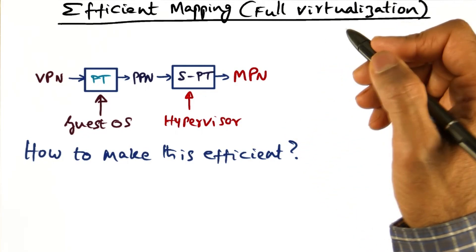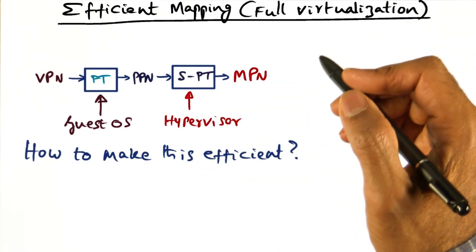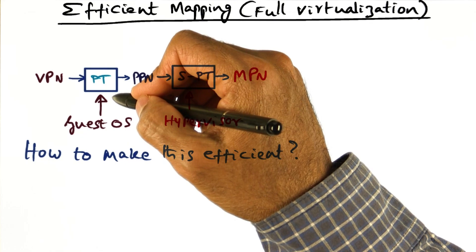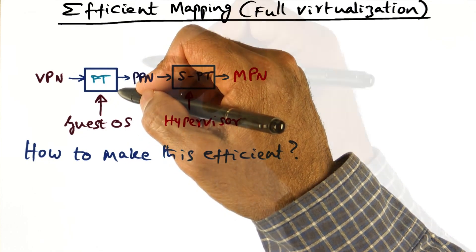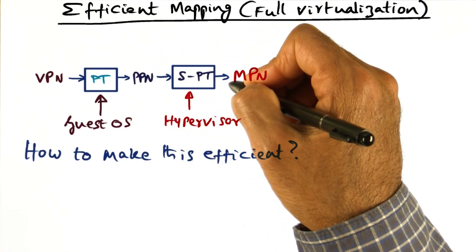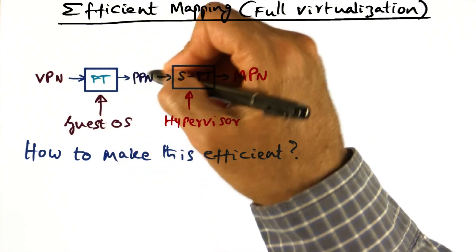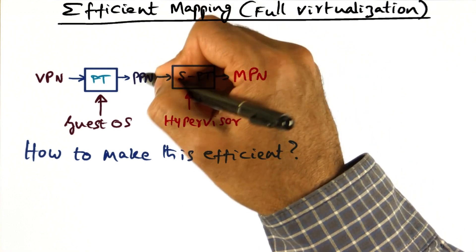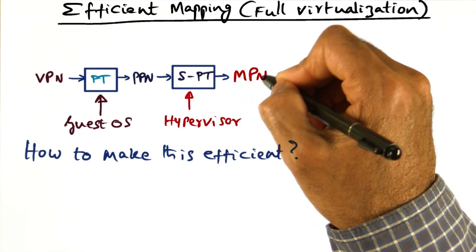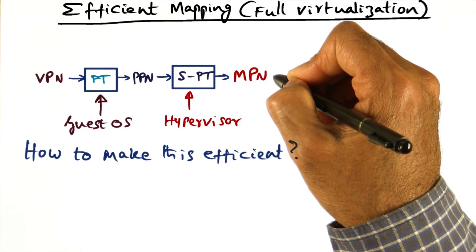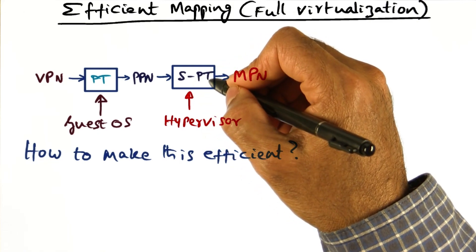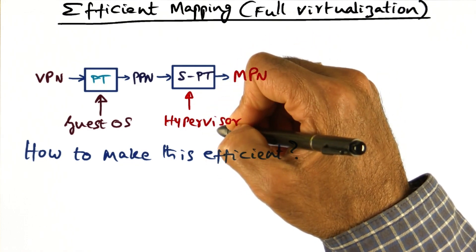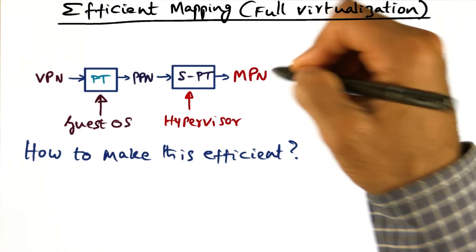As I mentioned, in a fully virtualized setting, the guest operating system has no idea about machine pages. It thinks that the physical page number that it is generating is a real thing, but it is not. Therefore, there are two levels of indirection: one level going from virtual page to physical page — that's an illusion — and then the hypervisor has to take this physical page and, using the shadow page table, convert it into the machine page. This shadow page table may be the real hardware page table that the CPU uses, and it is a data structure maintained by the hypervisor to translate the PPN to MPN.